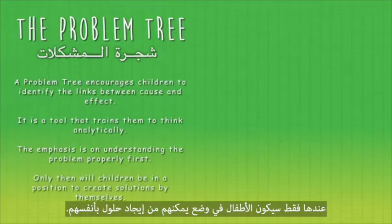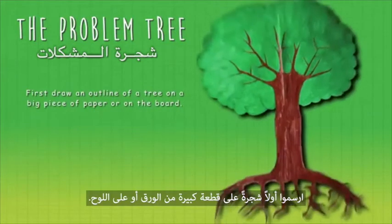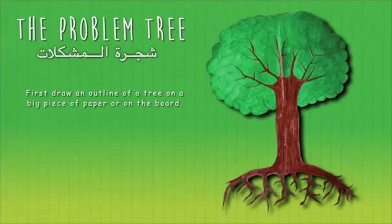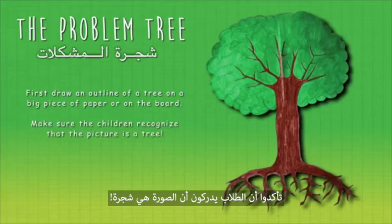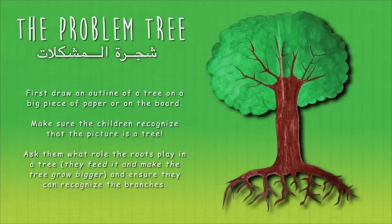Only then will children be in the position to create solutions by themselves. First, draw an outline of a tree on a big piece of paper or on the board. Make sure the children recognize that the picture is a tree, and ask them what role the roots play — they feed it and make the tree grow bigger.